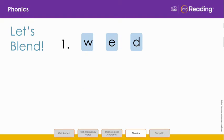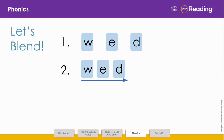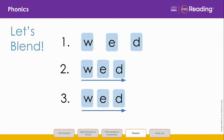We are going to blend the letters in line 1 to read another word. Say the letters and sounds with me: W, W, E, E, D, D. Let's slide the letters W, E, D close together. Listen as I slowly blend each sound and then read the word: W, E, D — WED. Now it's your turn. Look at line 3 and blend the word with me: W, E, D — WED. Good job!